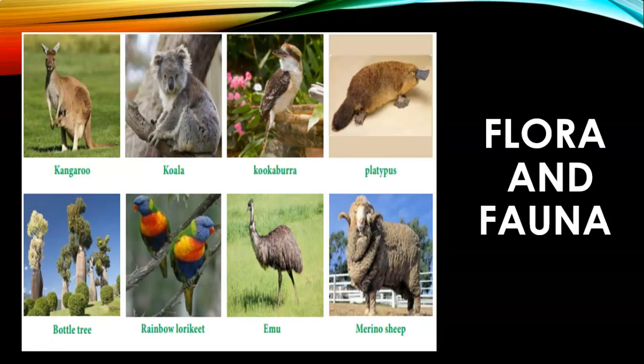Do you know the people who work in the sheep stations in Australia are known as the Jackaroo? Aborigines are the indigenous people of Australia. The major economic activities of Australia are agriculture, forestry, fishing, mining, manufacturing, trade, and services.